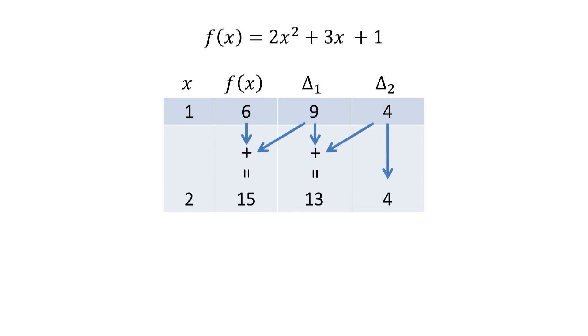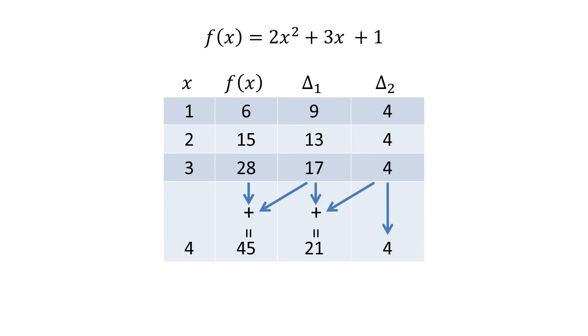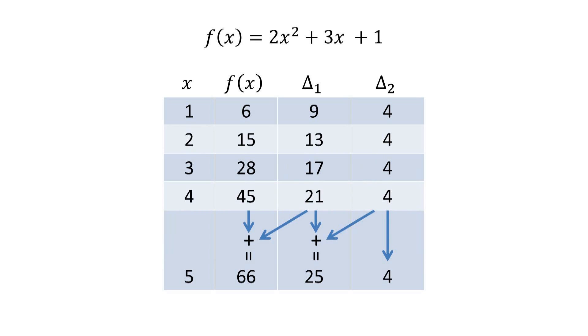And so on, ad infinitum. This method is completely general. For any polynomial of degree n, if you build a similar table with n difference columns, you can compute the next row's values using only n additions.